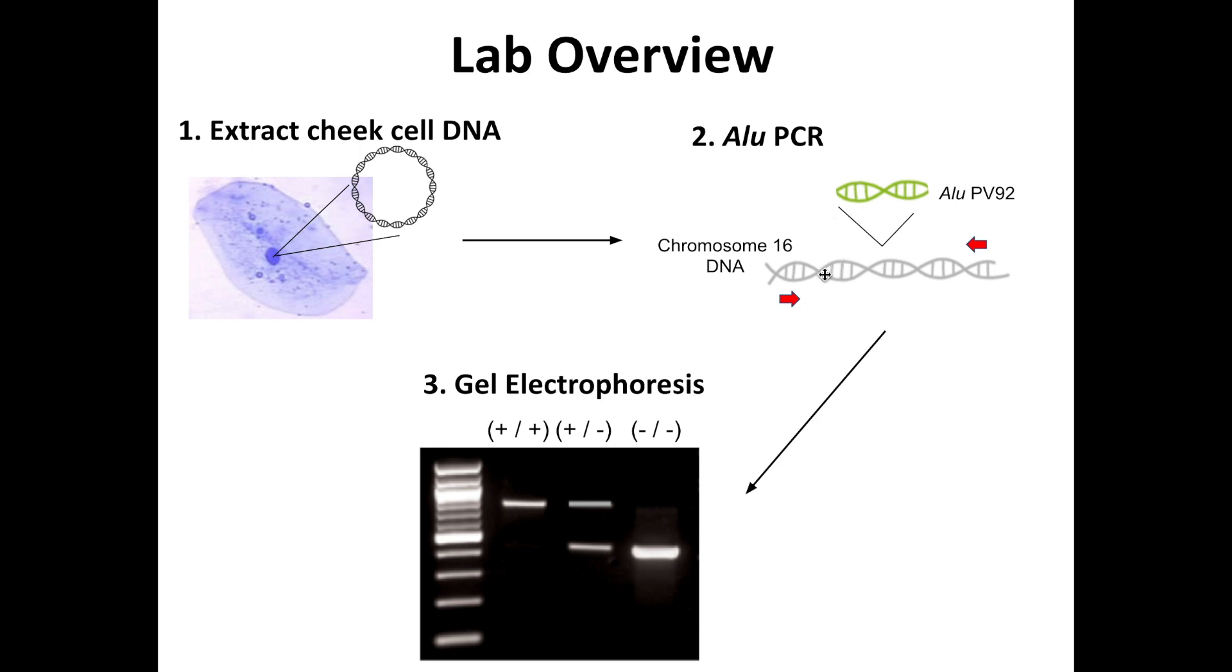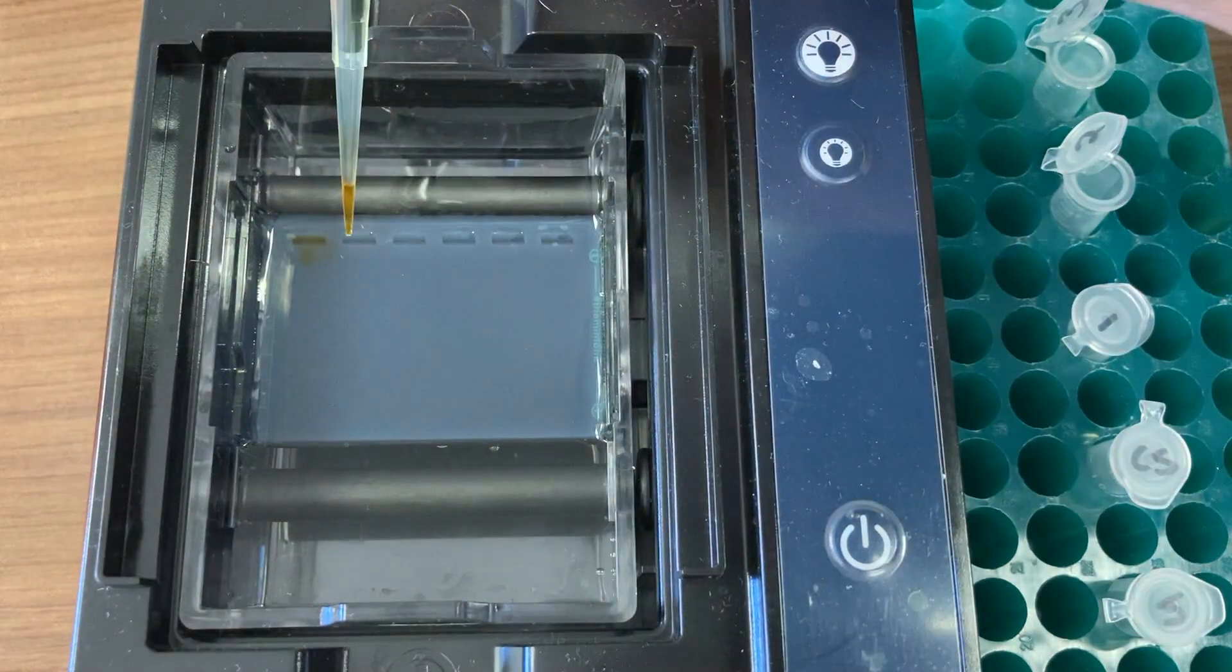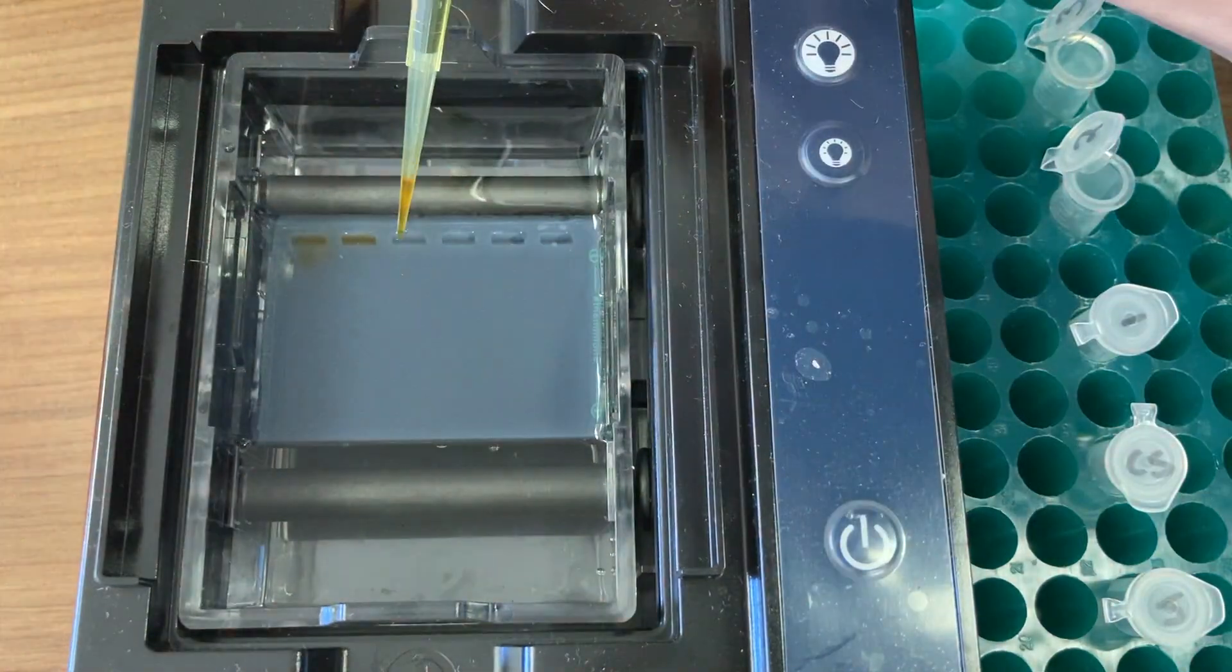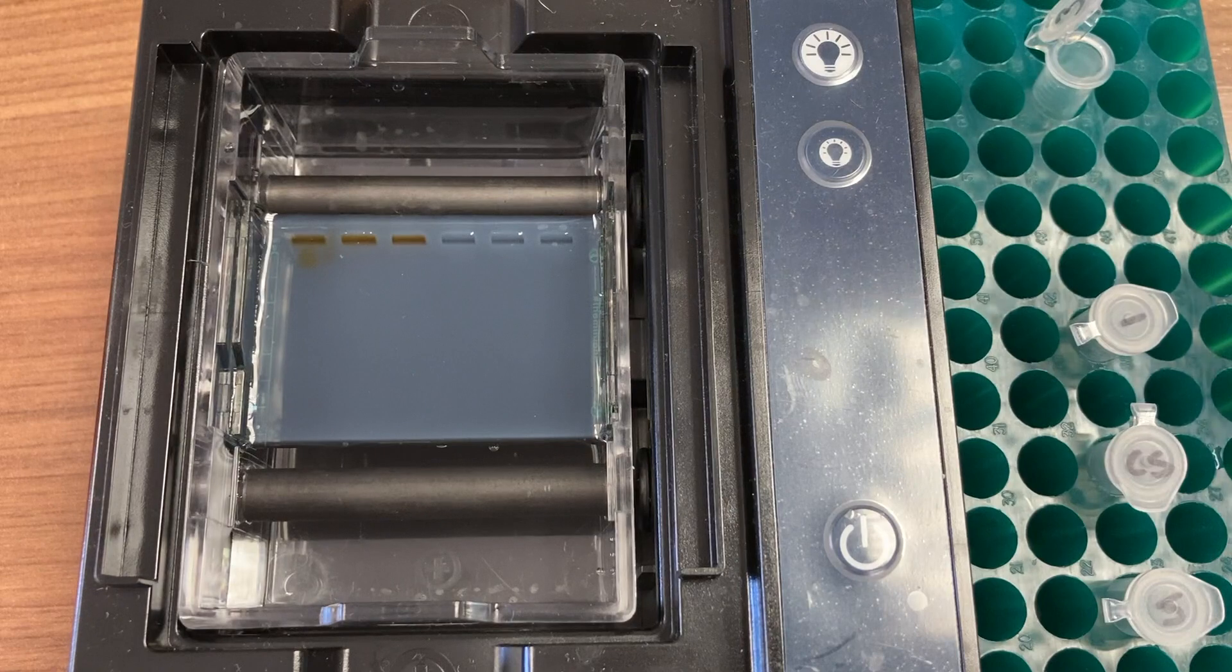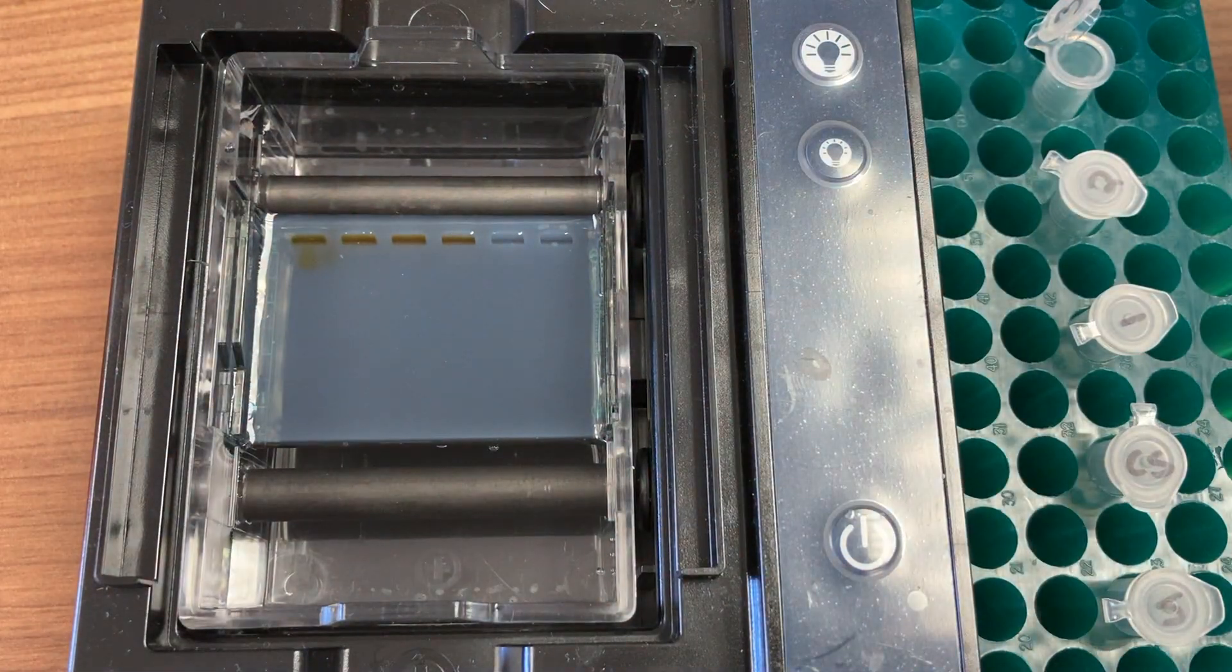Now, if our PCR is successful, we'll be able to visualize our ALU region through a process called agarose gel electrophoresis. We can visualize DNA by running it on an agarose gel like this one. We load our PCR samples with our DNA on one end of the gel and run electricity through the gel in a process called electrophoresis.